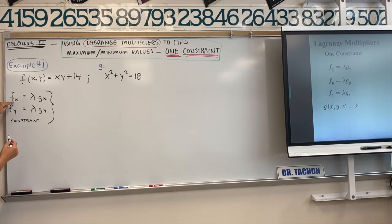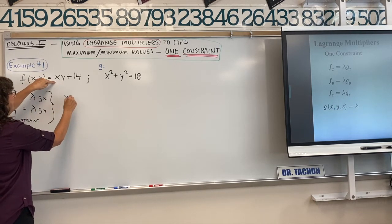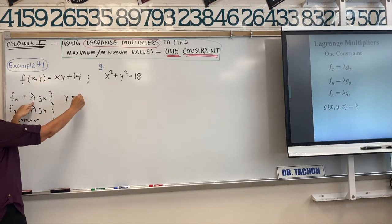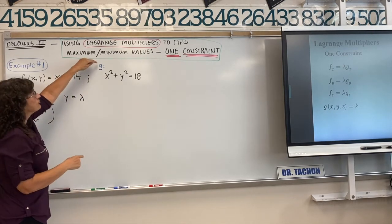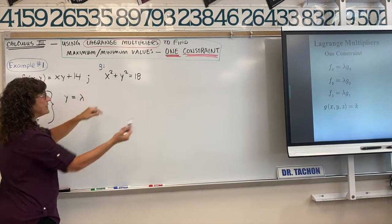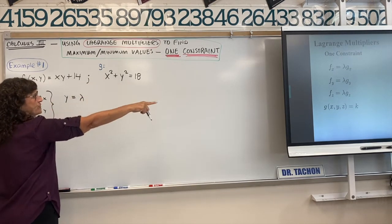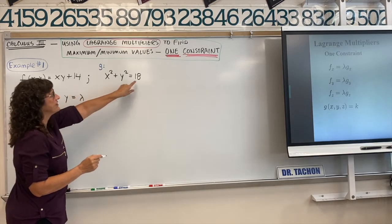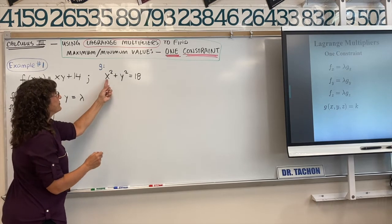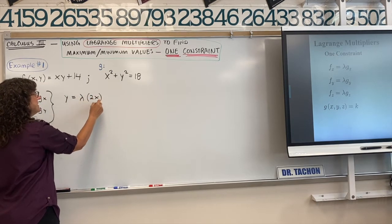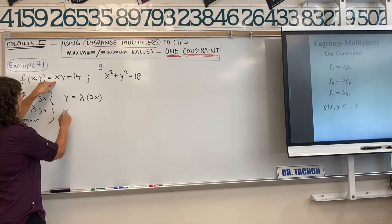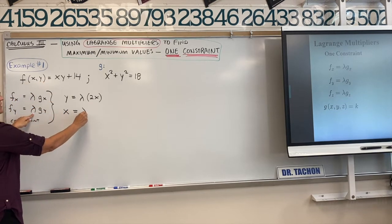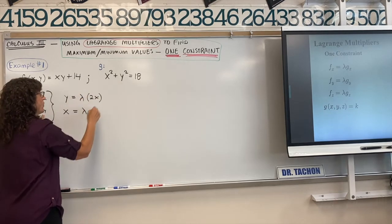Taking the partial of our surface with respect to x — treating y as constant — gives y. Set that equal to lambda times the partial of the constraint with respect to x, which is 2x. Then take the partial of the surface with respect to y, which gives x, and set that equal to lambda times 2y. And of course we have our constraint: x squared plus y squared equals 18.